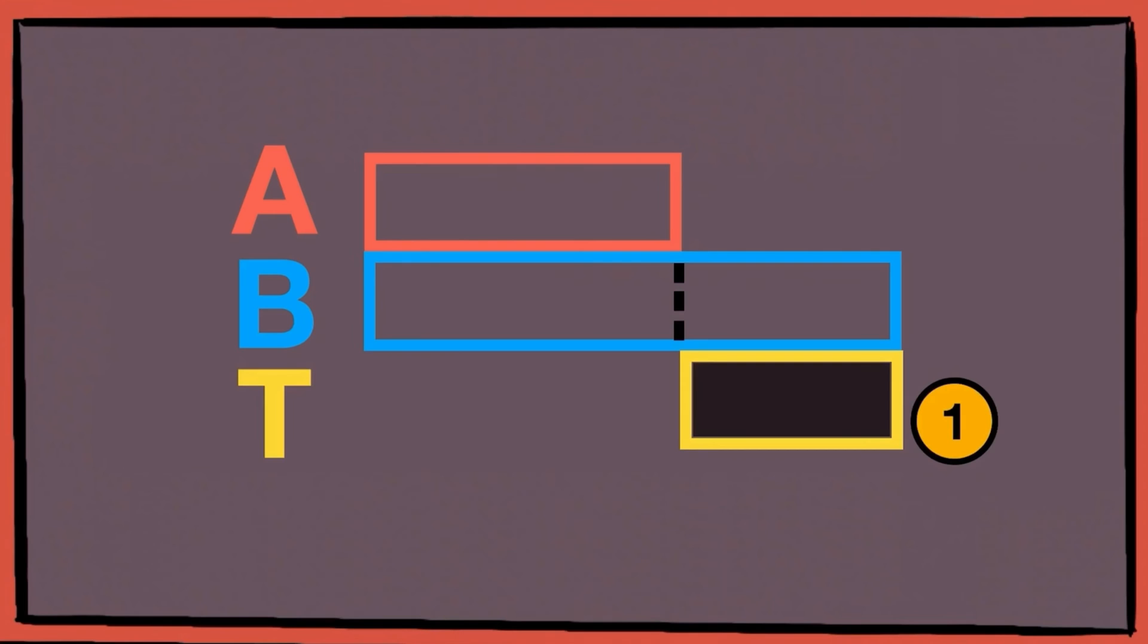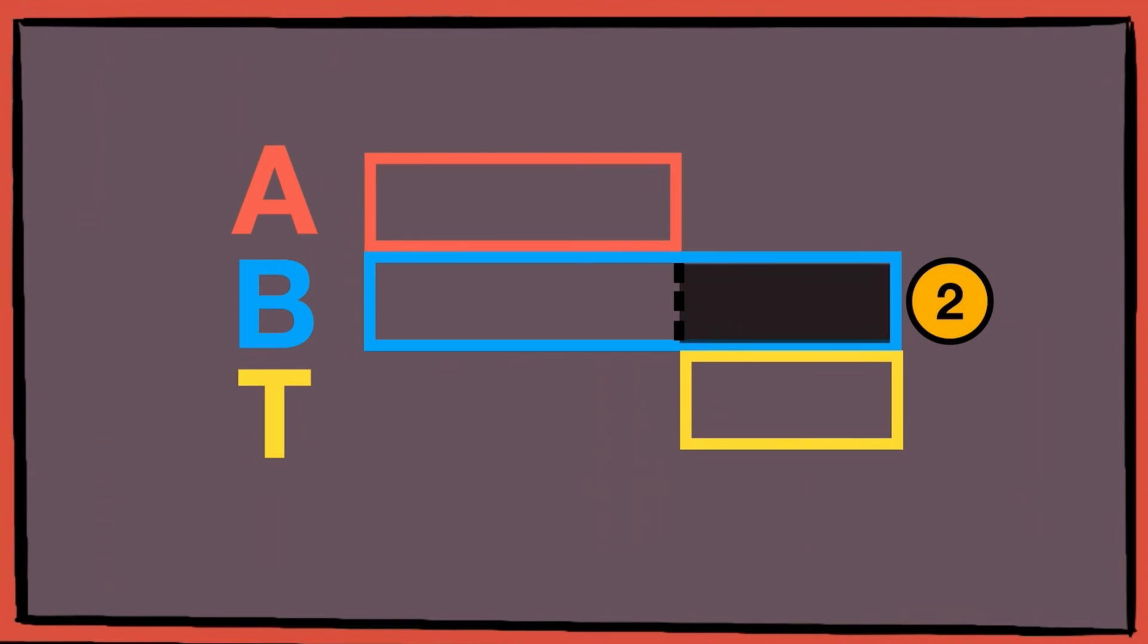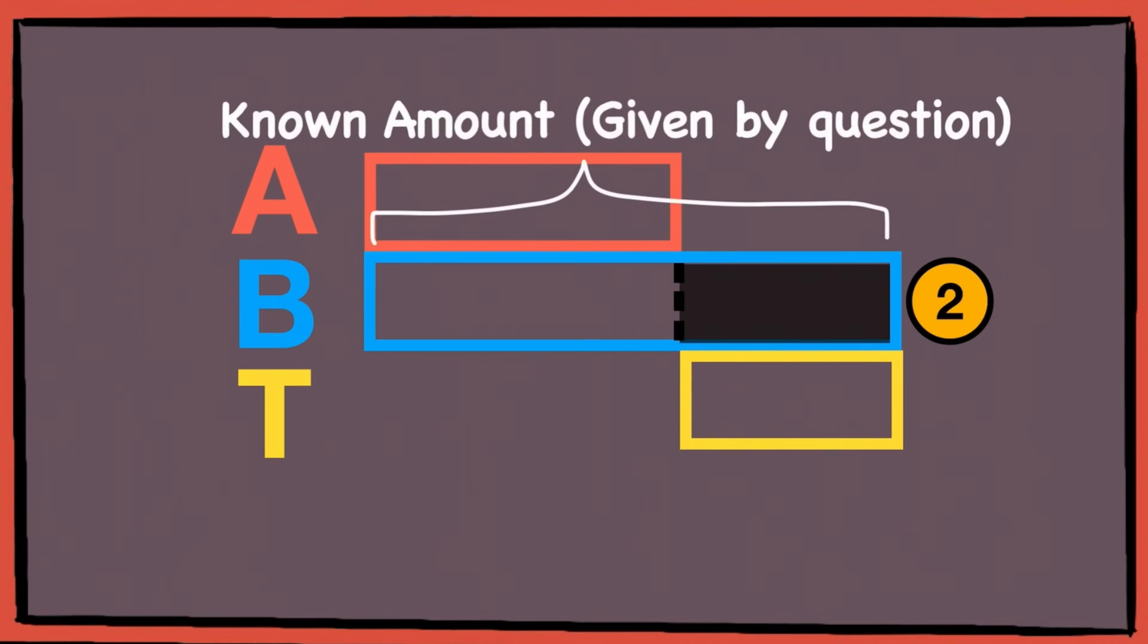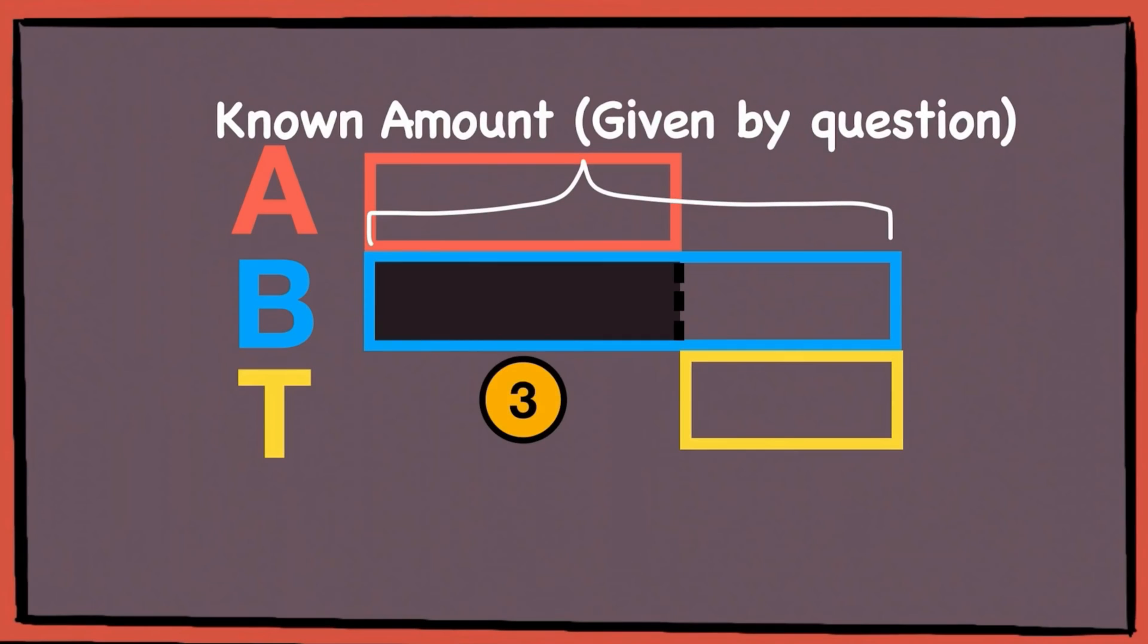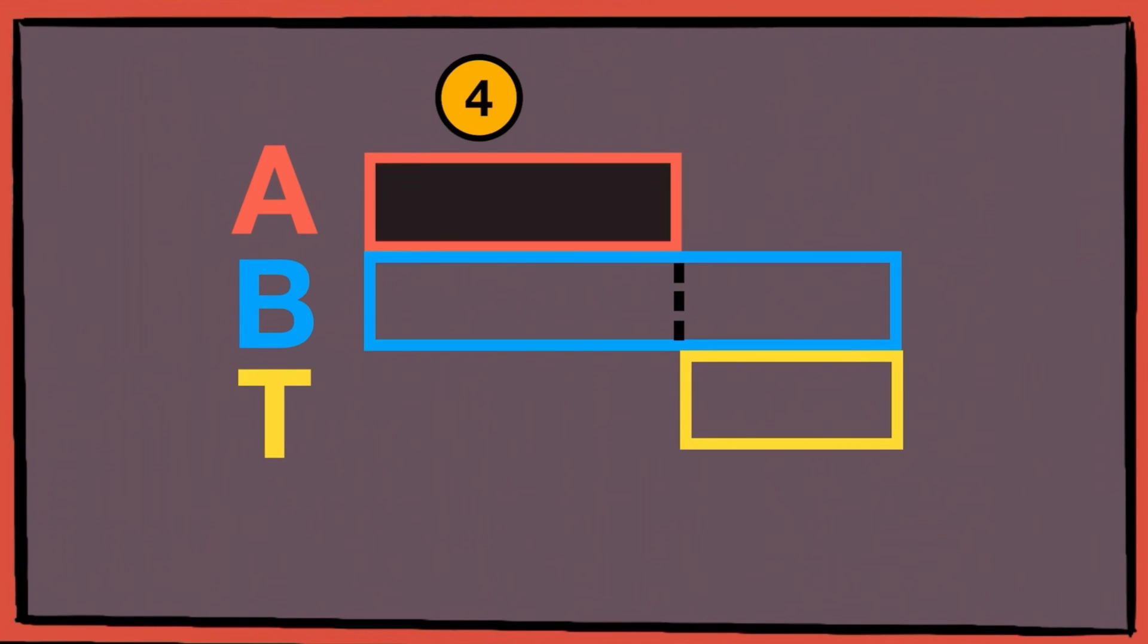So from the model, to find A, we need to first find the amount of T. And then we can find the amount of excess unreacted B. And because the exact amount of B is known to us, as it is given by the question, the amount reacted with A can be found by subtracting off with the excess unreacted B. Then finally, you can find A.